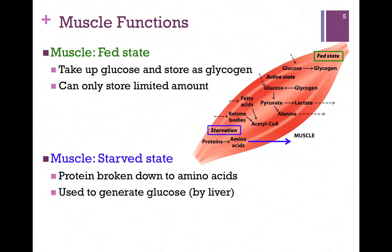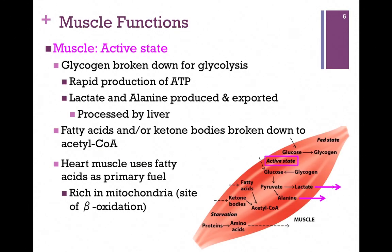In the starved state — highlighted in blue — where there's no fuel coming in and all glycogen stores have been used, the muscle will break down its own tissue, breaking down protein to amino acids, and the liver can use these to generate glucose that the muscle can therefore use. In an active state where the muscle is being actively used, it will break down glycogen for glycolysis, leading to the rapid production of ATP. To produce ATP rapidly through glycolysis, it reduces pyruvate to lactate. Pyruvate can also be transaminated to form alanine. Lactate and alanine are then sent to the liver for processing, and we'll see how that works in the next lesson.